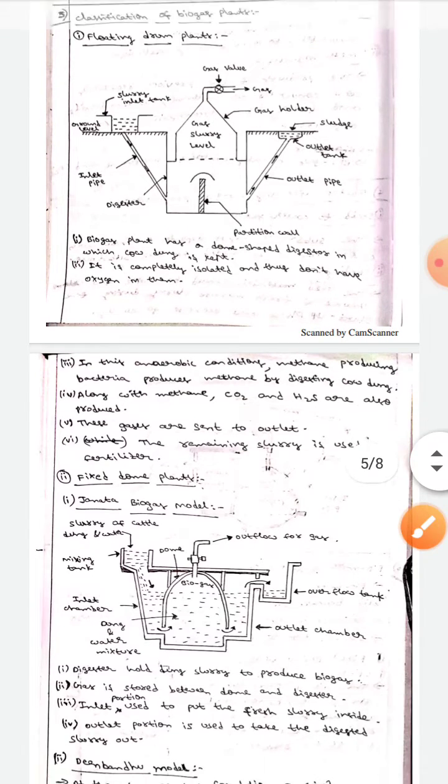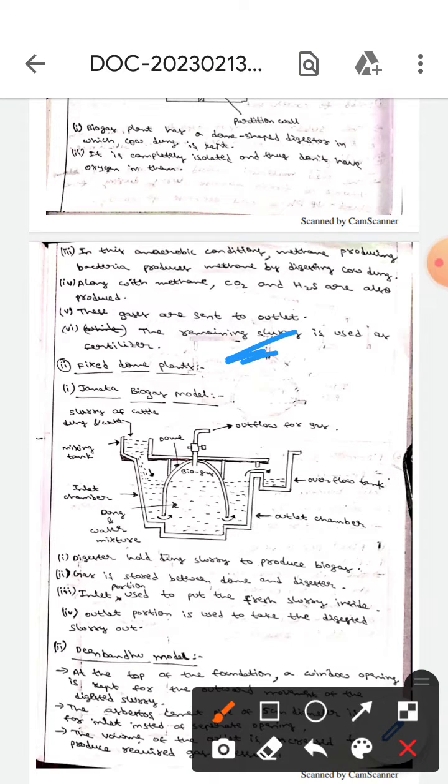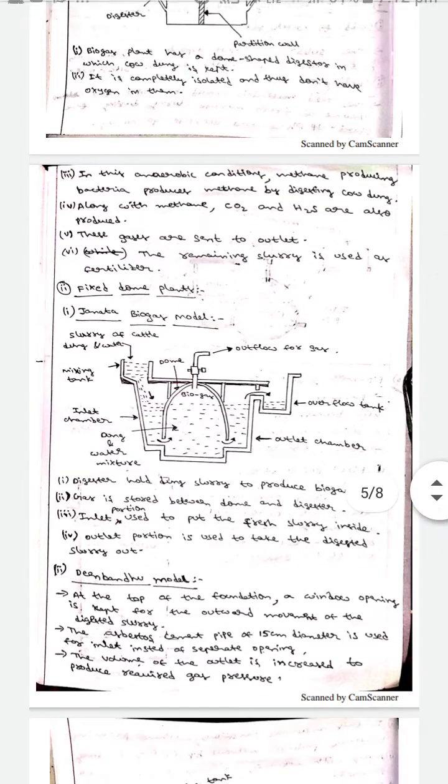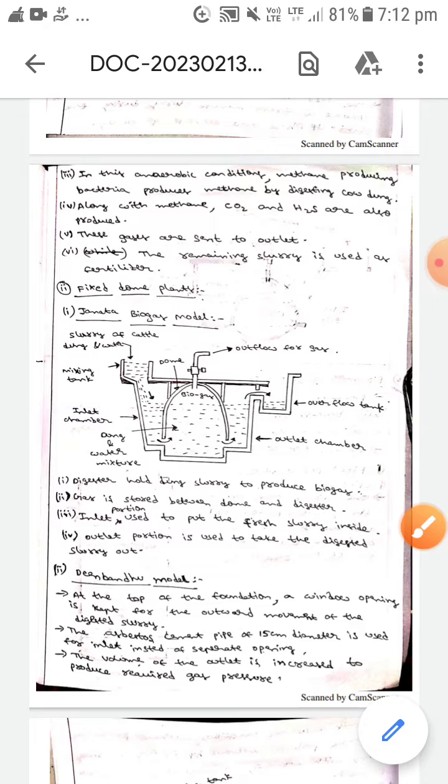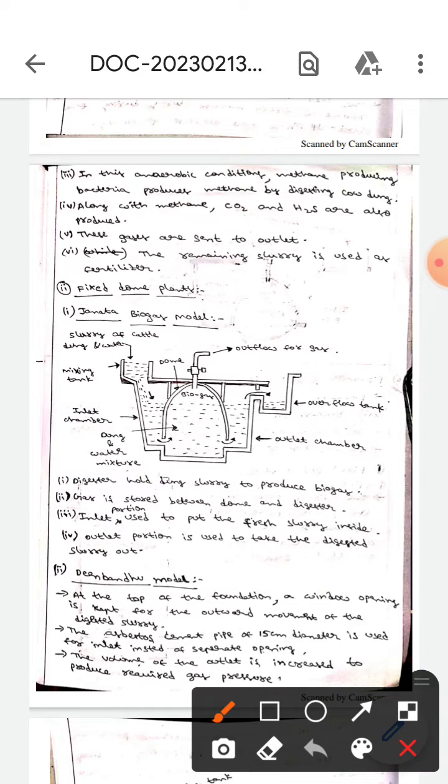biogas model. This diagram represents the Janata biogas model. Here, the digester holds slurry in order to produce biogas, and